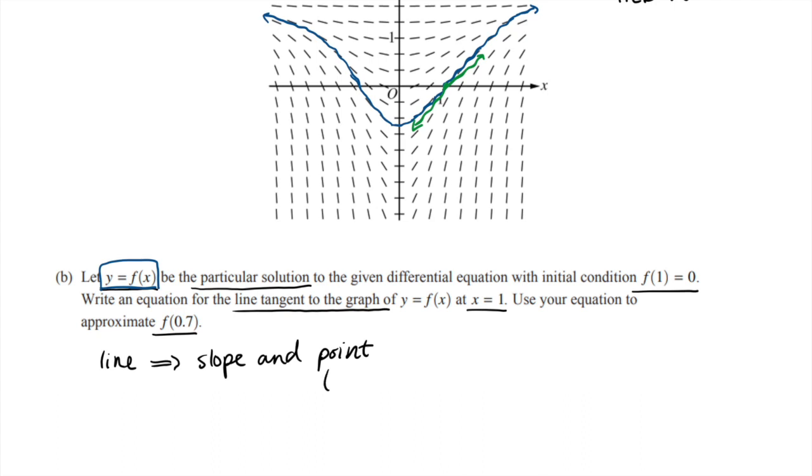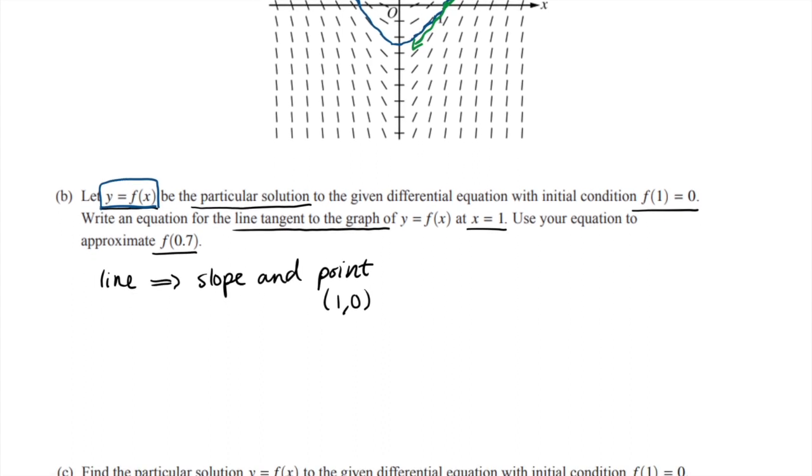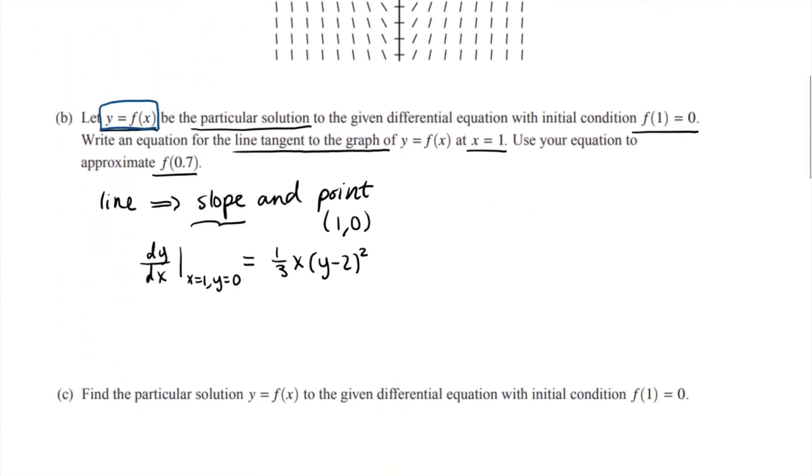Well, we already know the point—it goes through (1,0), they tell us that. And so to find the slope, we just have to use the differential equation that they give us, which tells us the slope at that point. So we have our slope then is going to be given by dy/dx evaluated at the point where x is 1 and y is 0. So we have 1/3 x times (y - 2) squared. Let me make sure I copied that right: 1/3 x (y - 2) squared. And we just need to plug in—this little bar means to evaluate—we plug in x equals 1 and y equals 0.